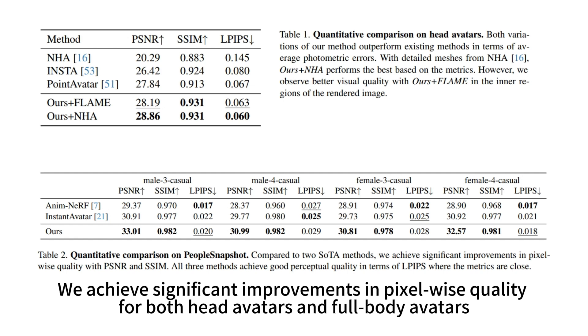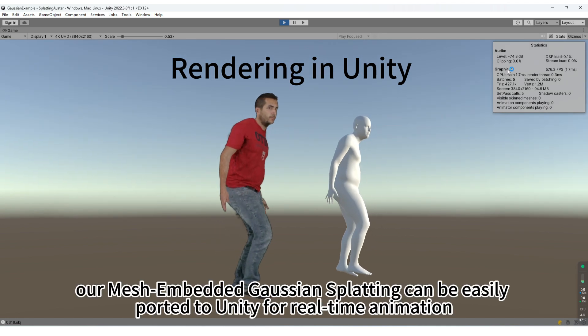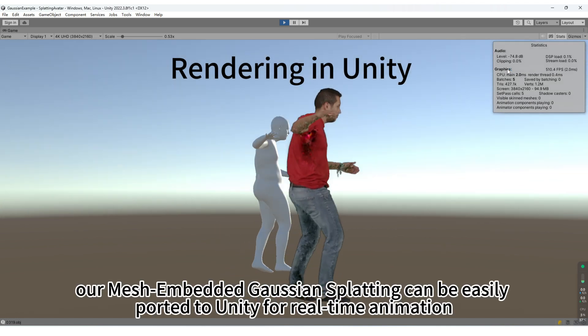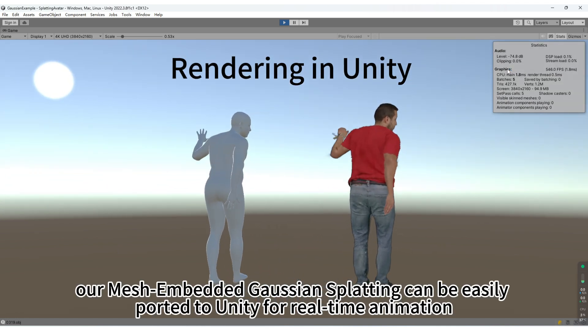We achieve significant improvements in pixel-wise quality for both head avatars and full-body avatars. After training, our mesh-embedded Gaussian splatting can be easily ported to Unity for real-time animation.